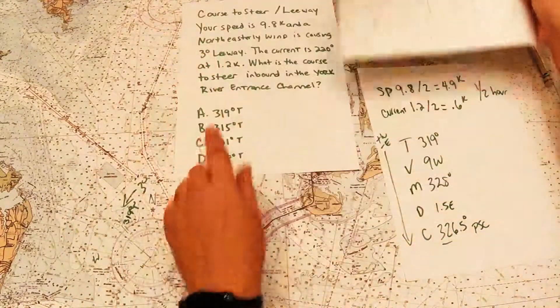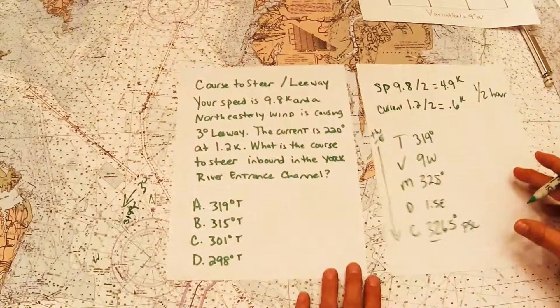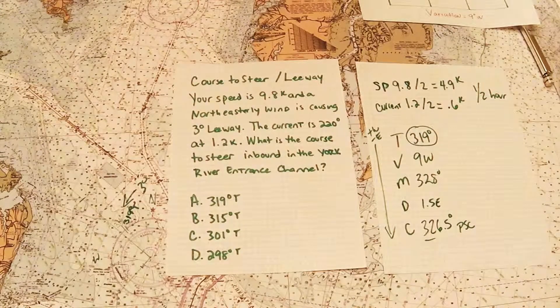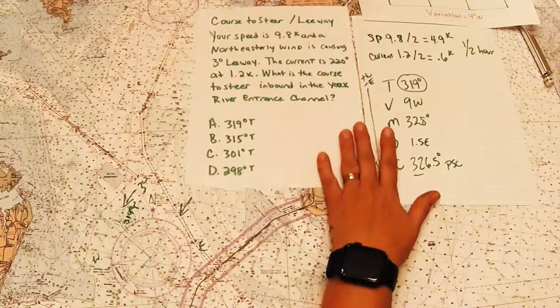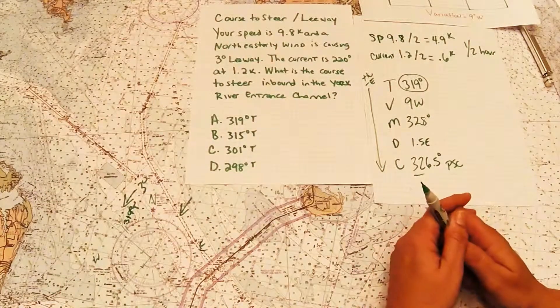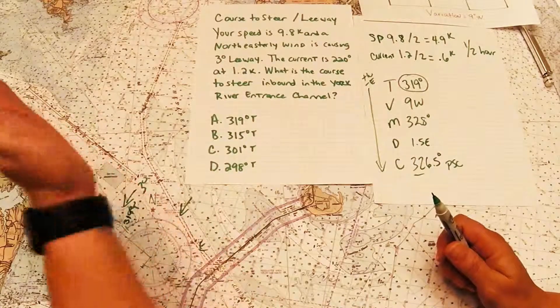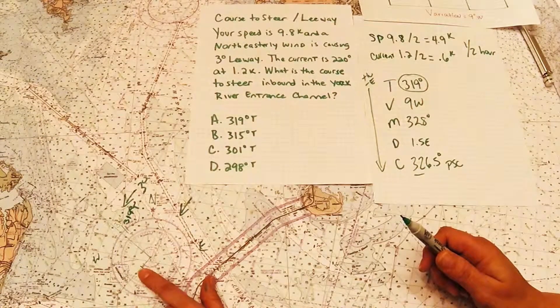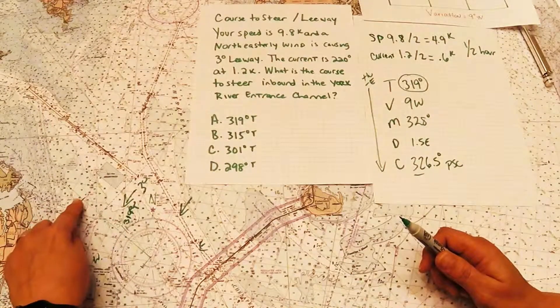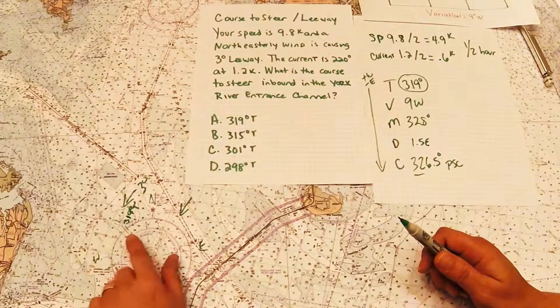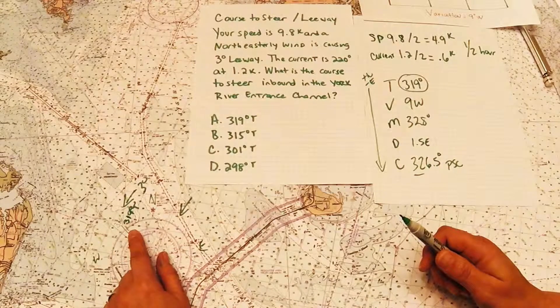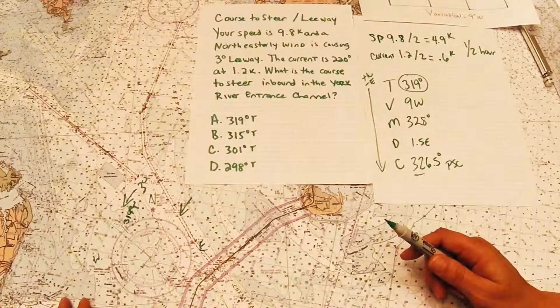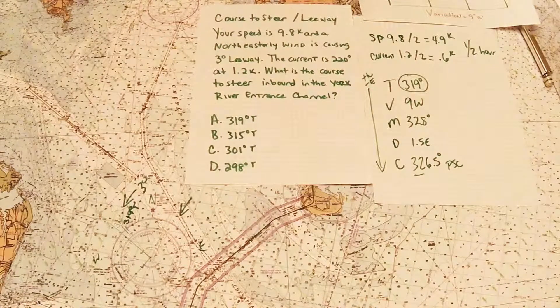So if our answers here were in PSC, or per standard compass, I would choose 326.5. But because this problem asked for true, I'm going to leave it right there at true. The only difference with some of these other problems is, sometimes they won't give you a channel to follow. They'll give you two points. The same idea plays in there. You'd plot the two points. Line them up. Draw out your main course. Plot your current, your set, and your drift away from it. From your set and drift mark, mark off your speed. Line up the two points. Walk it to the center. That gives you your course for the current. And then apply the wind. And remember, wind is always where it's coming from. In our case it was the northeast. So it's pushing us down. So we need to steer into the wind three more degrees. Which made it 319 true. Go practice some problems on your own.